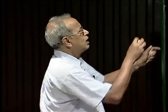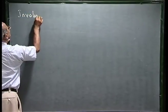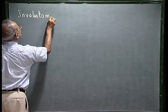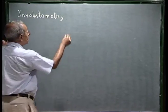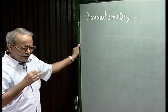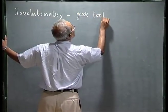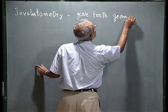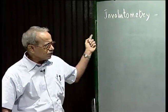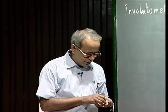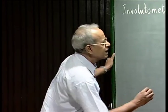Involute profiles are most commonly used and the geometry of involute teeth is a very vast subject. We are not going to cover all the details, but I will give a basic idea of this curve — what we call involutometry. The results we obtain from this involute geometry will be very useful to determine various proportions of the gear teeth. This is the application of involute geometry in gear tooth geometry, covering only the very basics.